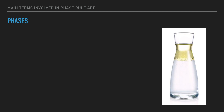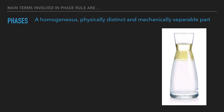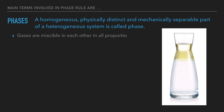First, phases. A homogeneous, physically distinct, and mechanically separable part of a heterogeneous system is called a phase. Gases are miscible in each other in all proportions, so a mixture of two or more gases constitutes a one-phase system.